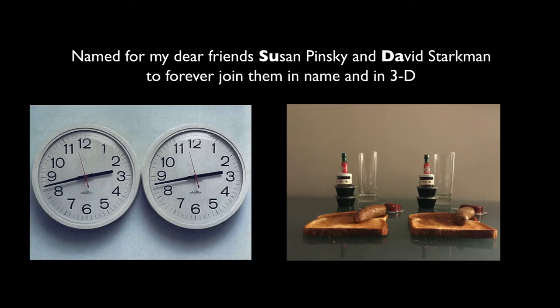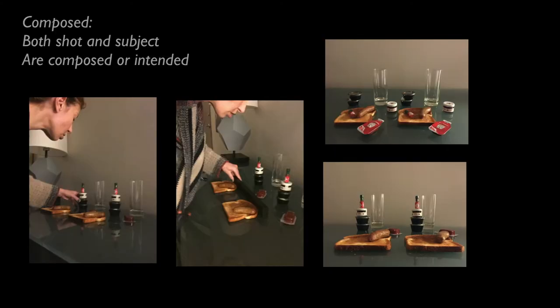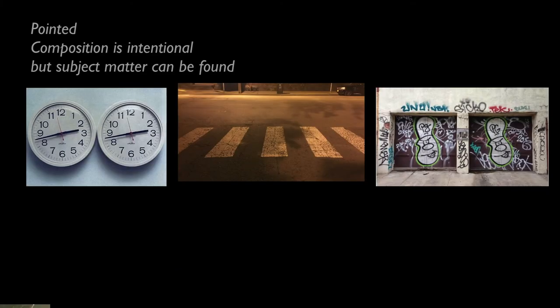There are two different types of this image — a pointed variety and a composed variety. There are two types of pseudographs you could take. This is a composed shot: I know wherever I go there's always going to be two of some item, and I can compose them on the spot anywhere. This is made out of breakfast today — you just have to align them, and you can make them out of any two items. A pointed one is composed by you, but the composition is not necessarily created by you. The shot is composed and framed, but the composition is not necessarily yours.